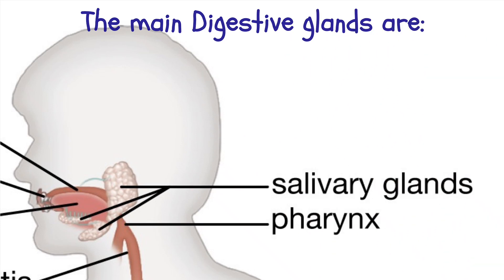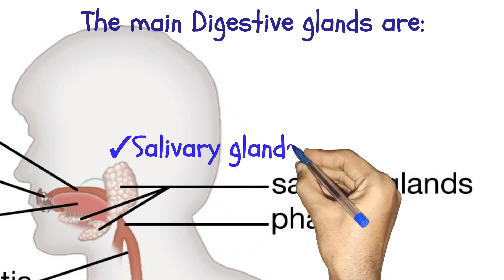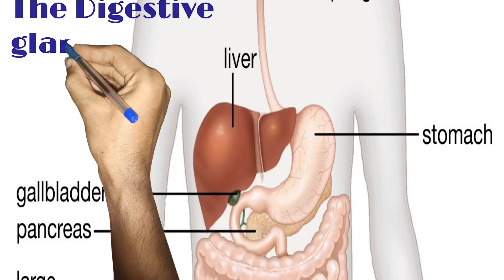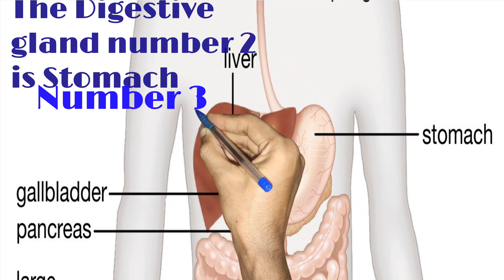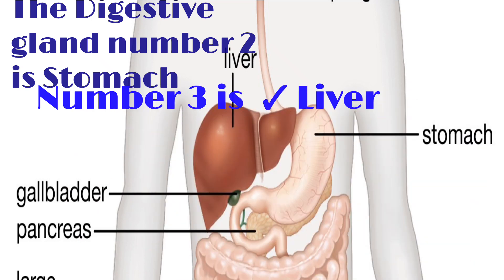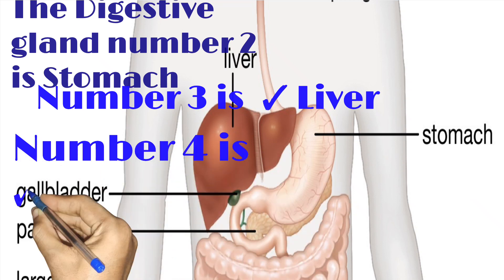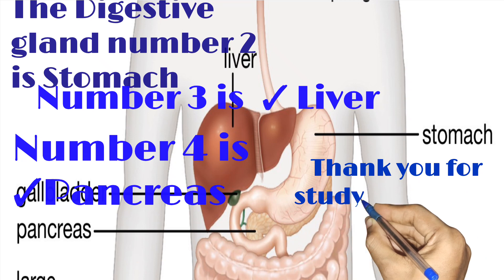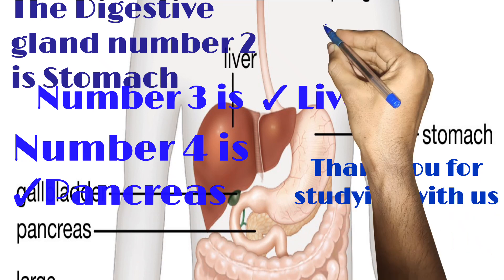The main digestive glands we can see are salivary glands, which are located in the buccal cavity, and also the stomach, the liver, as well as the pancreas. These are the digestive glands that help in digestion of food chemically, using their chemicals.